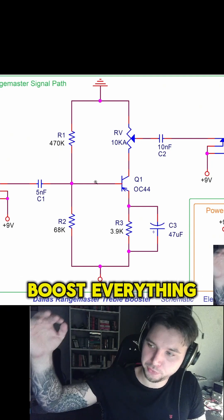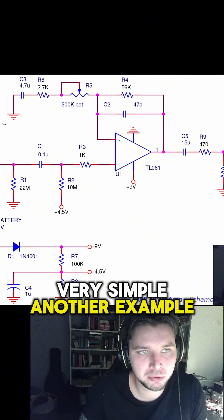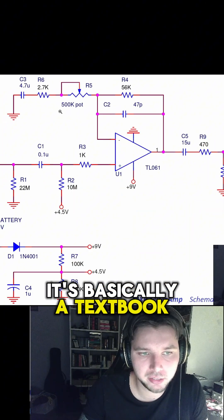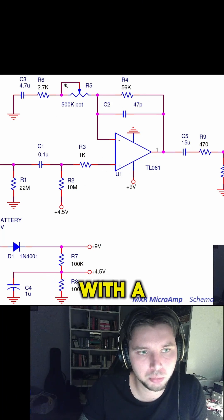Another example, MXR Microamp. Very simple circuit as well, it's basically a textbook circuit. We've got a non-inverting op-amp configuration here with a logarithmic pot in here which sets the gain.